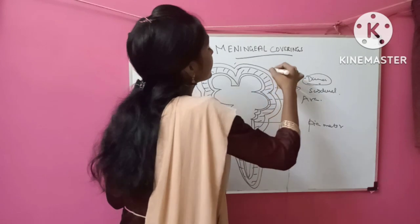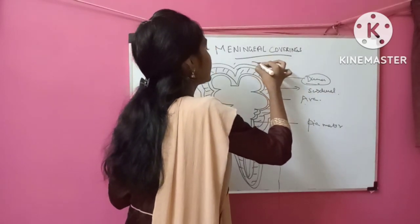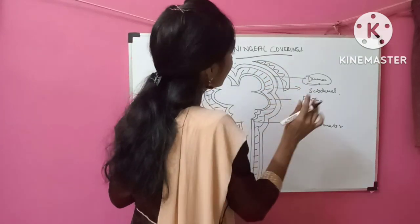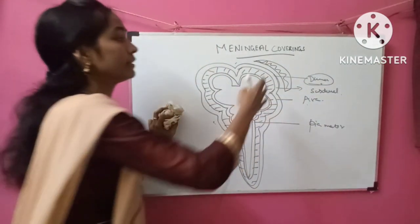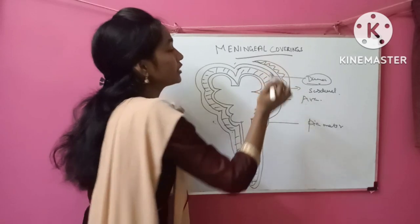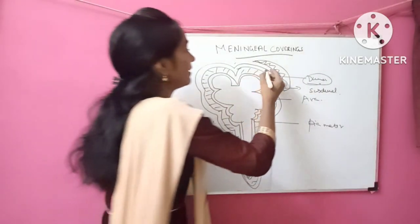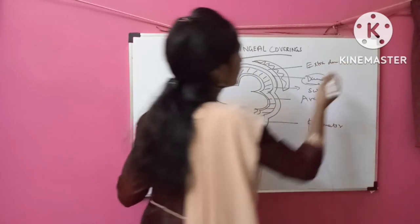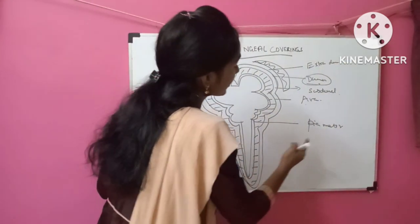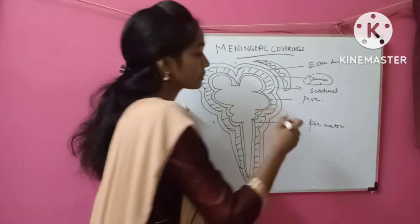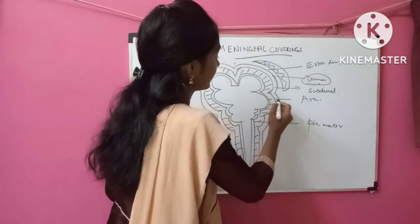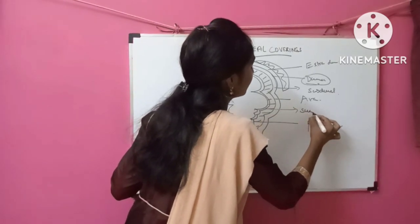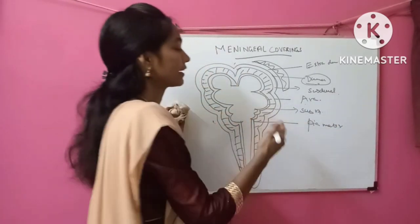If the space is outside the dura mater — for example, it is the bone tissue, periosteum — then if the space is between the periosteum and the dura mater, then it is called extradural or epidural space. Likewise, if the space is between the arachnoid mater and the pia mater, then it is subarachnoid space — under the arachnoid mater.